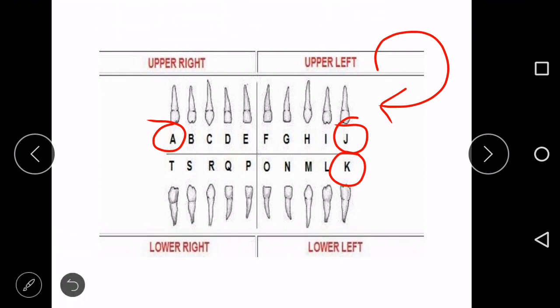Then to K, that is mandibular left second molar, and ends at T, that is mandibular right second molar. So if we say tooth P, we know that we are talking about central incisor of mandibular right arch, mandibular arch right side.